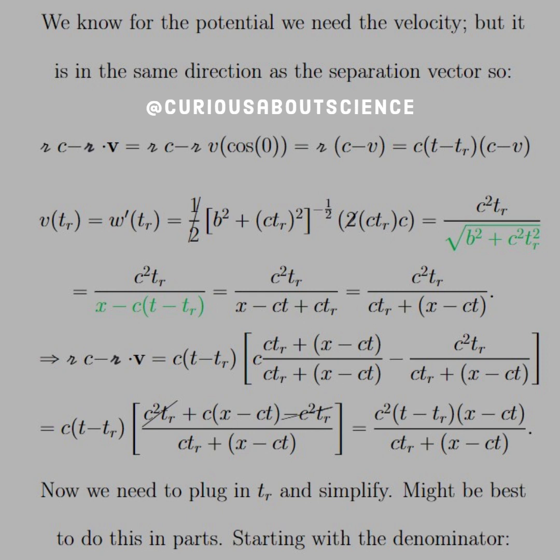So with that, we have V at T_R is equal to the prime, or the time derivative of W at T_R. So, you know, we know the square root for hyperbolic motion. Bring the 1/2 down, use your chain rule, the 2s cancel, and we're left with C squared T_R over that square root of B squared plus C squared T_R squared. I put this in terms of green so we can reference our last question when we're trying to find the retarded time, and we're going to substitute in the X for that. But the reason why, now we can simplify things down into a manner that might be useful later.